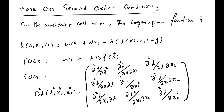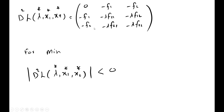The alternate form of this matrix is given by evaluating the second order derivatives at the critical values lambda*, x1*, and x2*. It should be noted that for the minimization of the function, the second order derivatives are bordered by the first order derivatives of the constraint — that is f1 and f2. This border of the constraint's first order derivatives surrounds the second order derivatives of the production function.